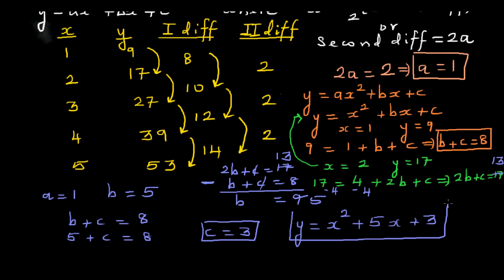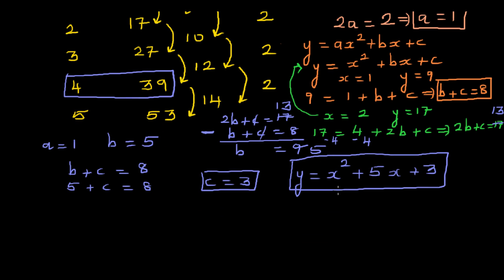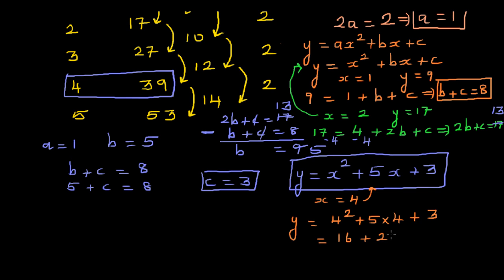Let's verify the equation. When x = 4, y should be 39. Substituting: y = 4² + 5(4) + 3 = 16 + 20 + 3 = 39. This confirms our equation y = x² + 5x + 3 is correct.